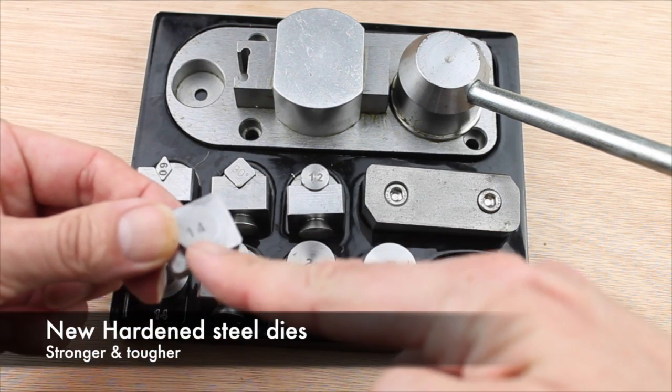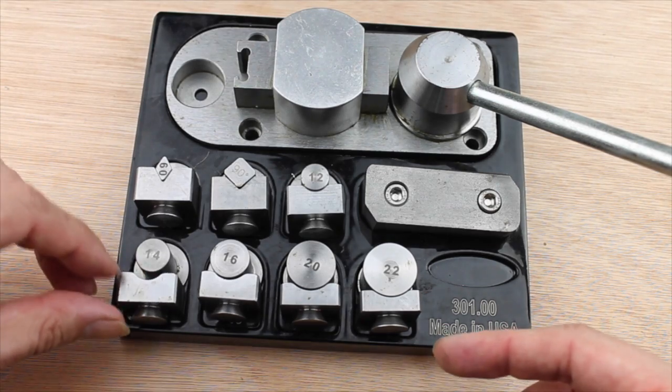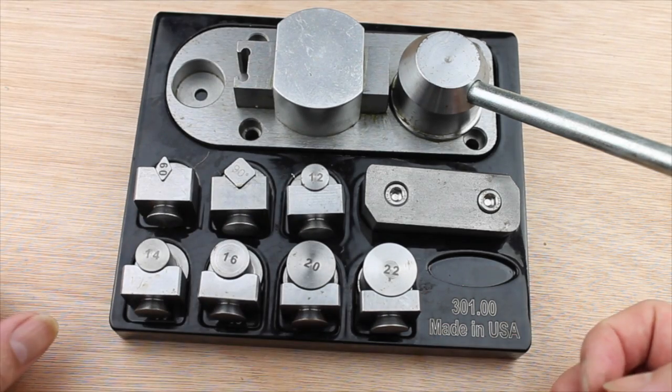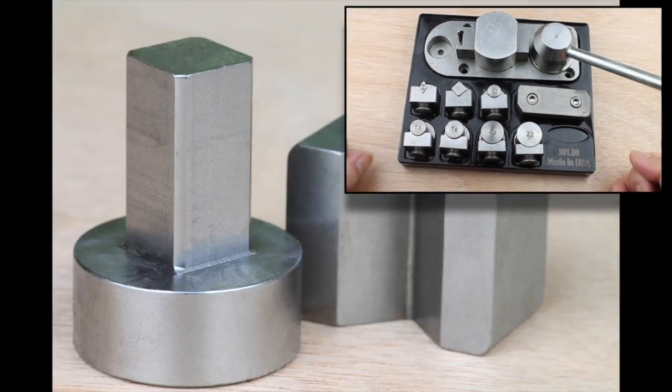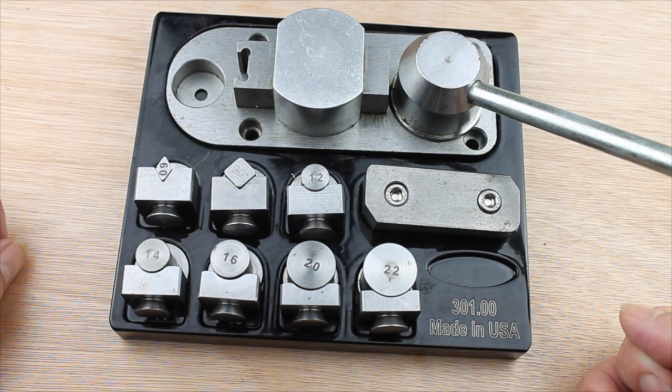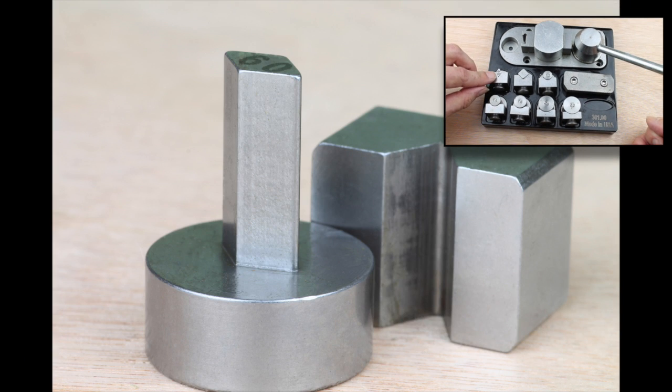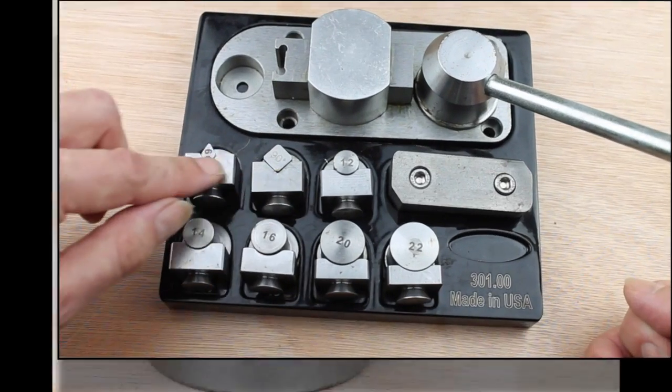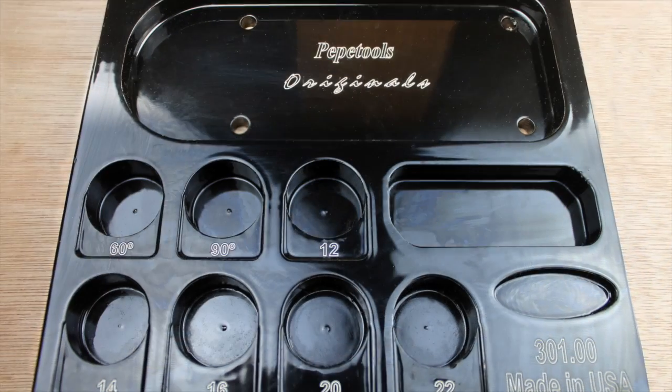Each one comes with a matching die of the same size, so you can see we've got five circular ones. We also have a square one here which is 90 degrees and again a matching mandrel for it, and we have a diamond shaped one at 60 degrees and again a matching mandrel for that. The whole thing sits on this powder coated aluminum base for storage and organization.